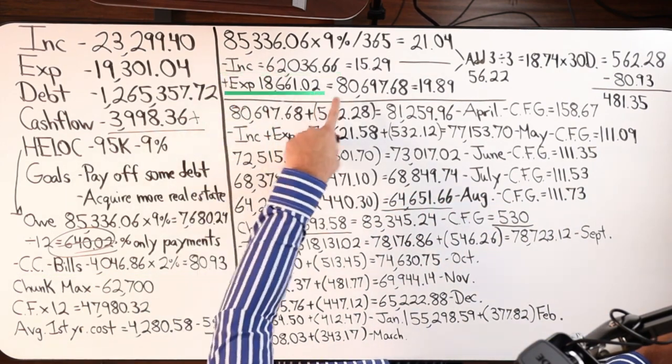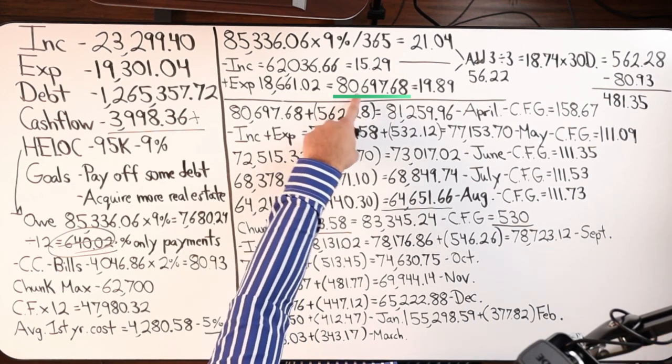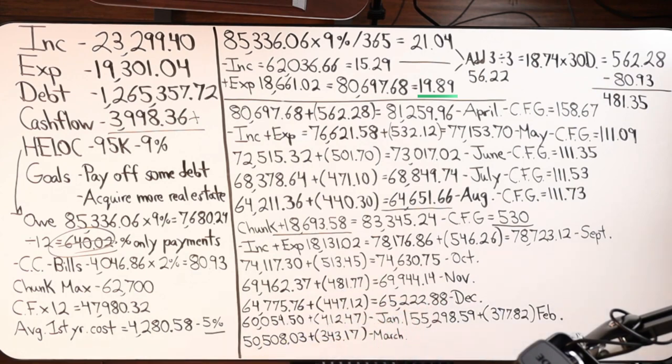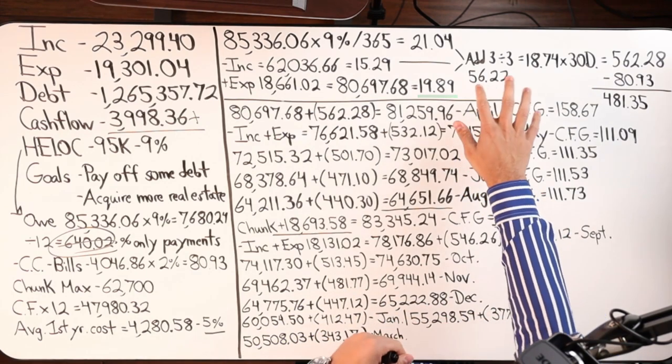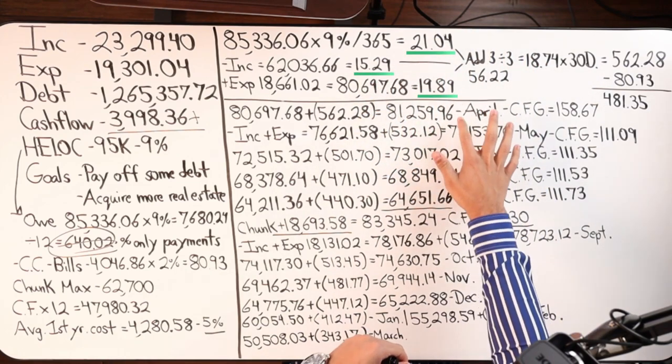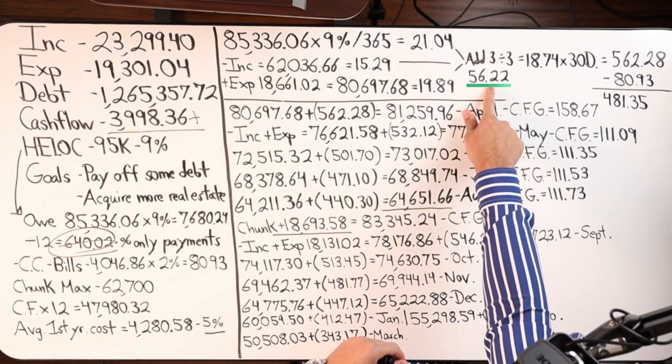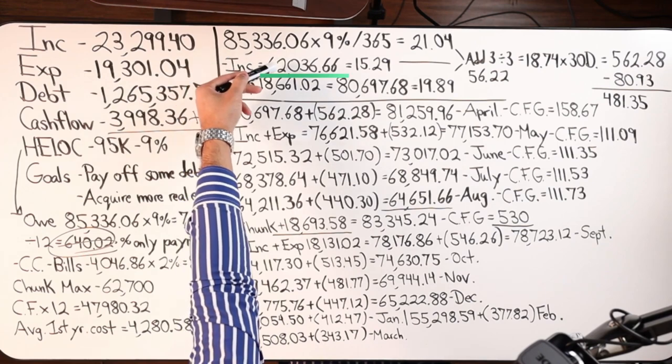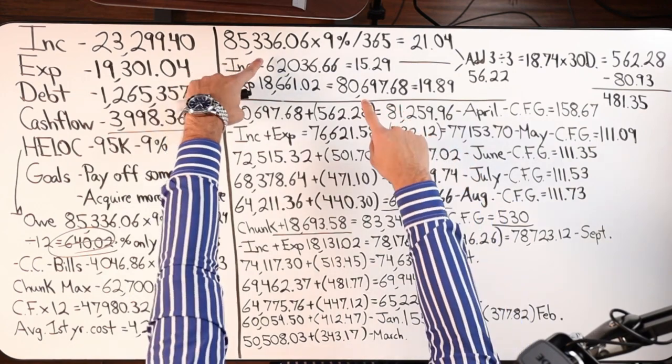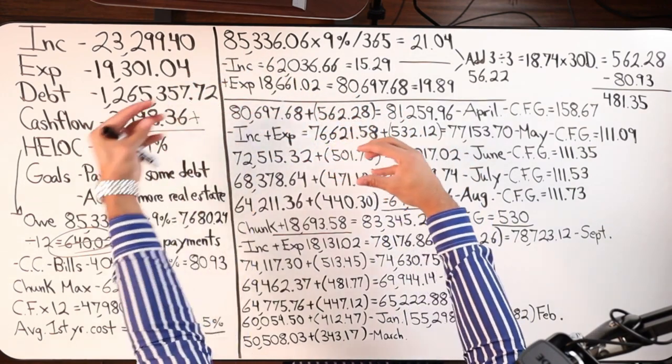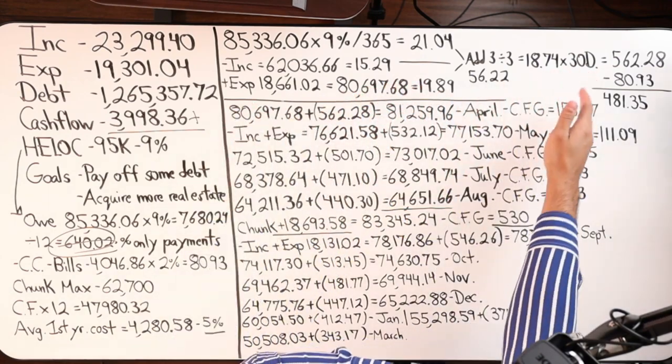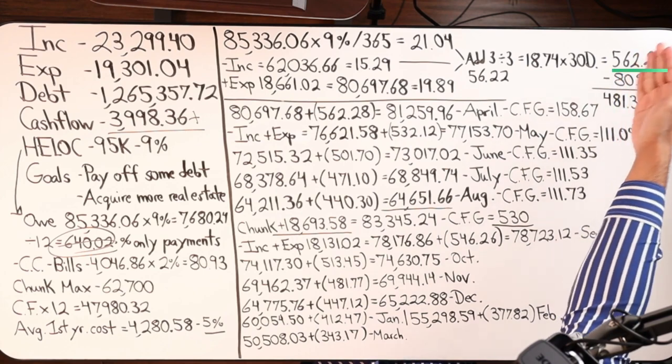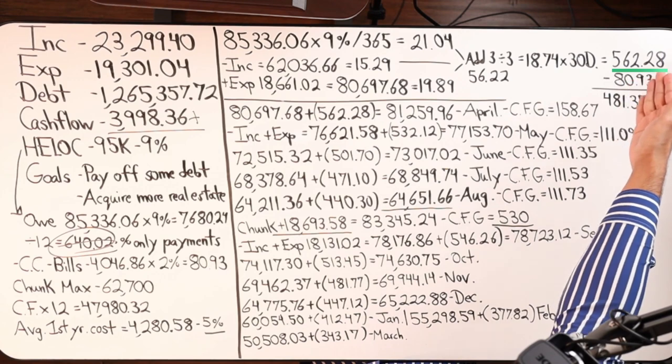So here we go. Income went in, expenses came out at the end of the month. Here's where my balance should be. $80,697.68. Times that by 9%, divide by 365, you should get $19.89. So what you do is you're going to add the three numbers, $21.04, $15.29 and $19.89. Add the three and get this number, $56.22. Divide by three, you should get this number. This is assuming again, that he owed 85 grand for 10 days, 62 grand for 10 days, and then 80 grand for 10 days. That's not the case. It's more like in the middle of all those numbers is what's happening. So on average, we're paying about $18.74 a day. Times that by 30 days. Here is your overestimated borrowing costs in the first month of doing velocity banking, $562.28.